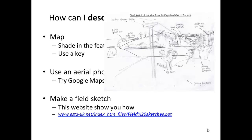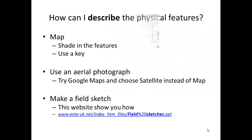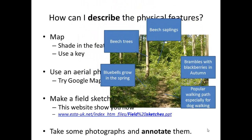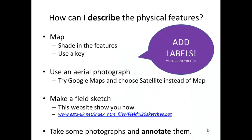The fourth thing you could do is also primary data collection. You could simply take some photographs and annotate them with the physical features in your local area. Remember the most important thing is to add labels. The more detail you put in the better.